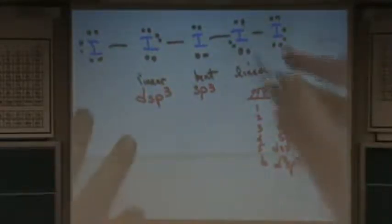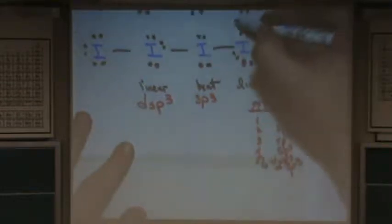So this one is actually the same over here. This is also DSP3. Five groups. This little table I made for you. You don't do hybridization on terminal atoms, so don't worry about that.